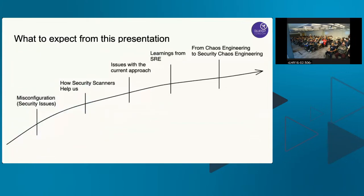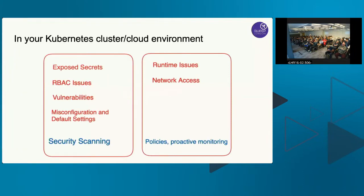Now let's get into the talk. I'm going to first focus on different security issues in cloud infrastructure and Kubernetes environments, focusing on misconfigurations as a subsection. Then I'll cover how security scanners identify misconfigurations and the workflows for implementing security scanning. Then I'll highlight the limitations of security scanners and share learnings from chaos engineering that we can apply to security chaos engineering.